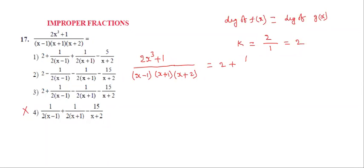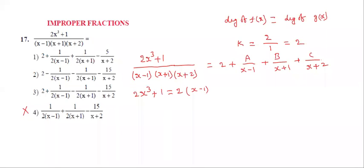Write K = 2, plus the remaining terms split into partial fractions: A/(x-1) + B/(x+1) + C/(x+2). Taking the LCM on the right hand side, the denominators cancel. The remaining equation is: 2x³ + 1 = 2·(x-1)(x+1)(x+2) + A·(x+1)(x+2) + B·(x-1)(x+2) + C·(x-1)(x+1).